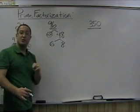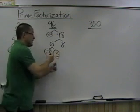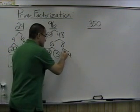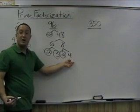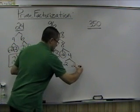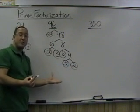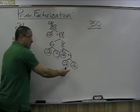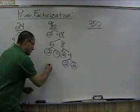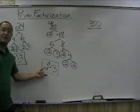8 breaks into 2 times 4. 2 is prime, but 4 is not — 4 comes from 2 times 2. Now we've reached all prime numbers and can't go further. We can write 2 times 2 times 2 times 2 times 3, but shortened using exponents that's 2 to the 4th times 3. That is the prime factorization of 96.